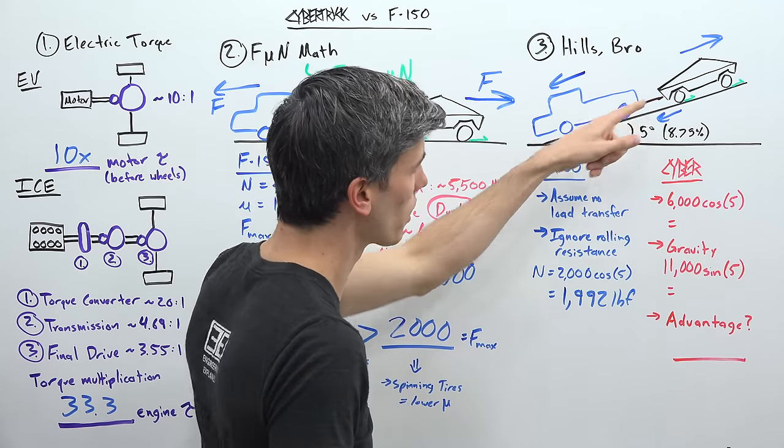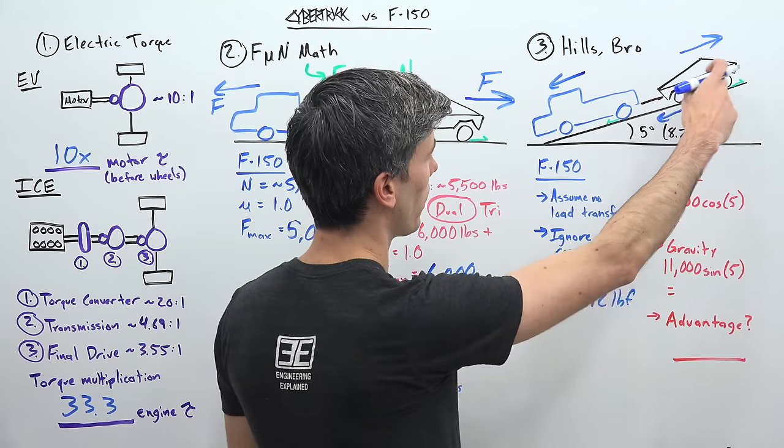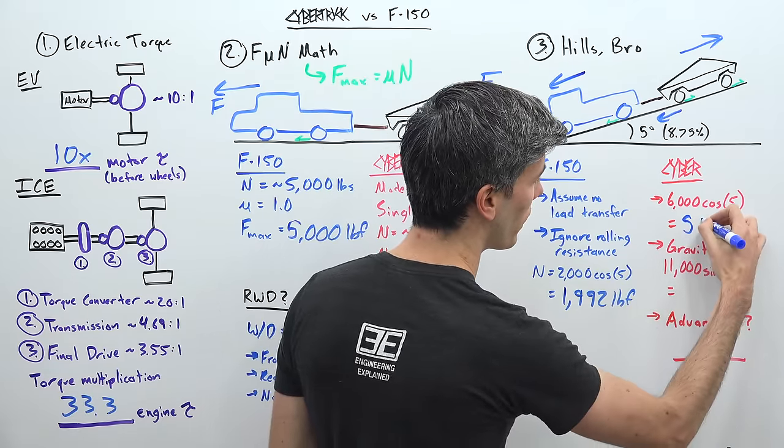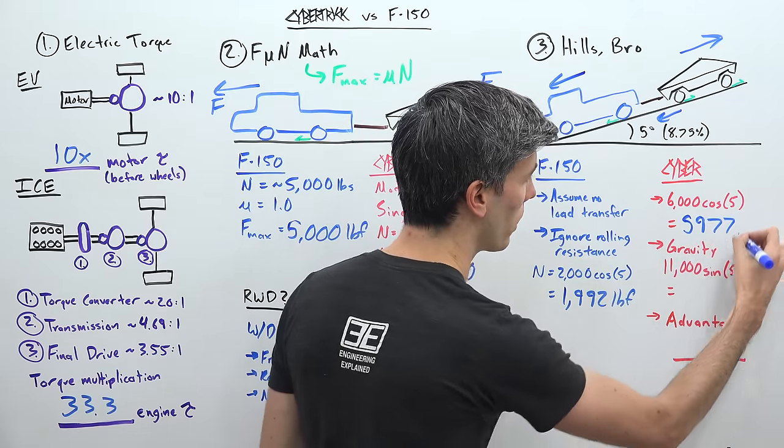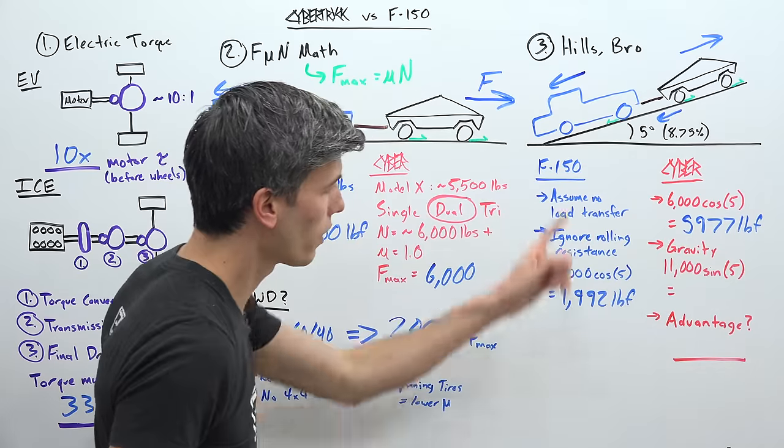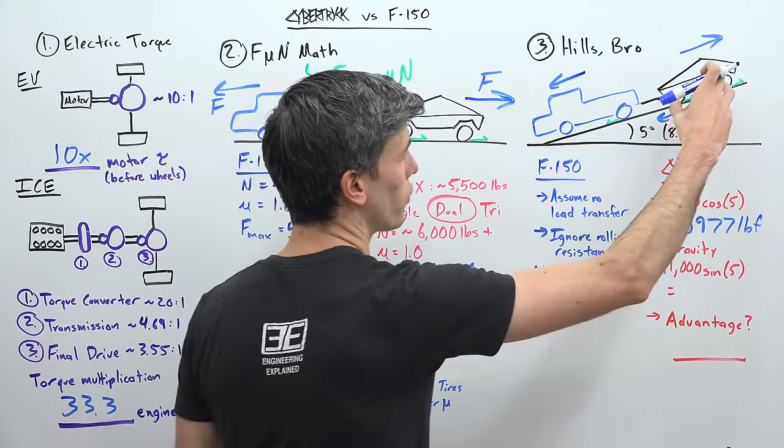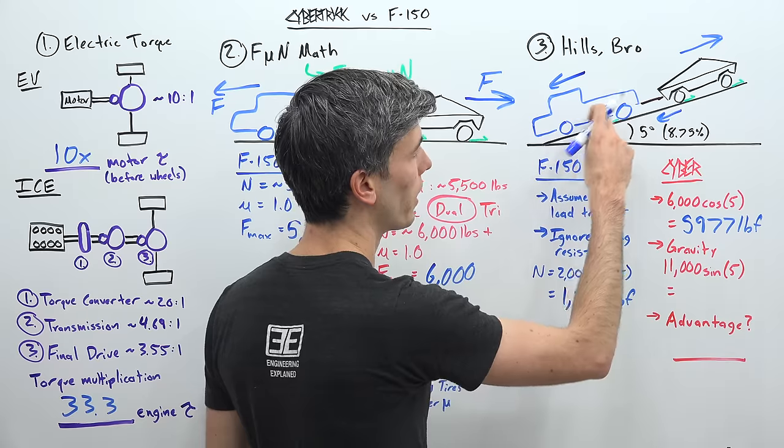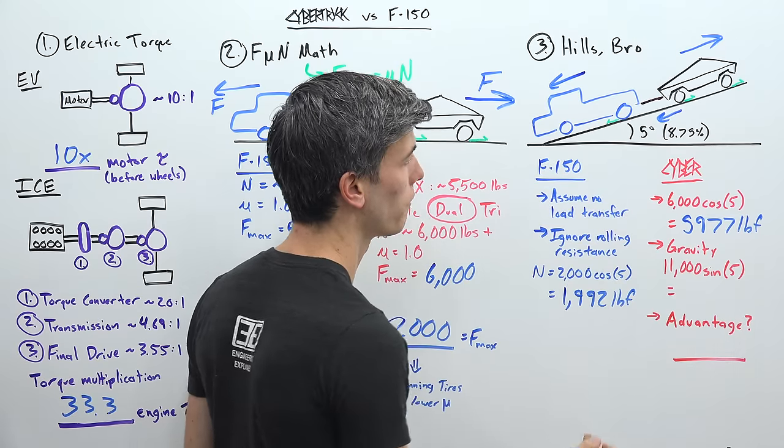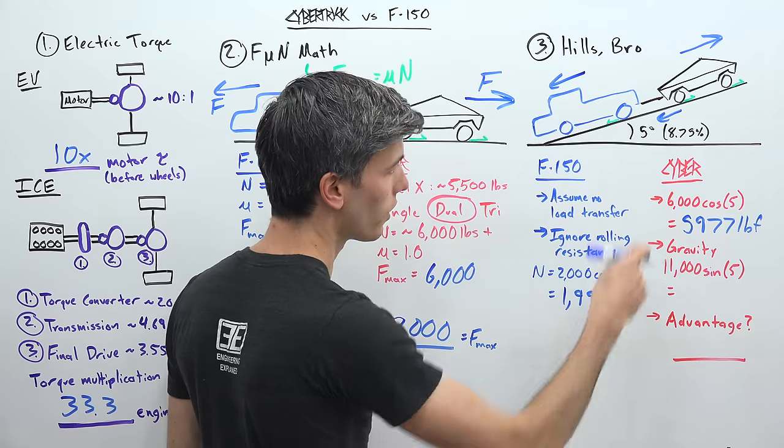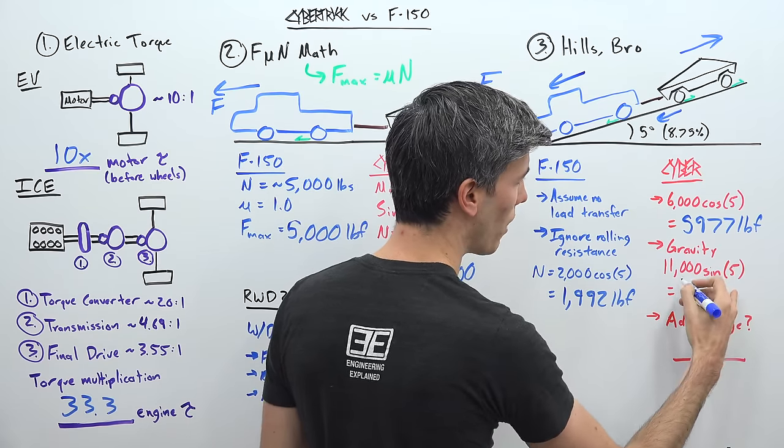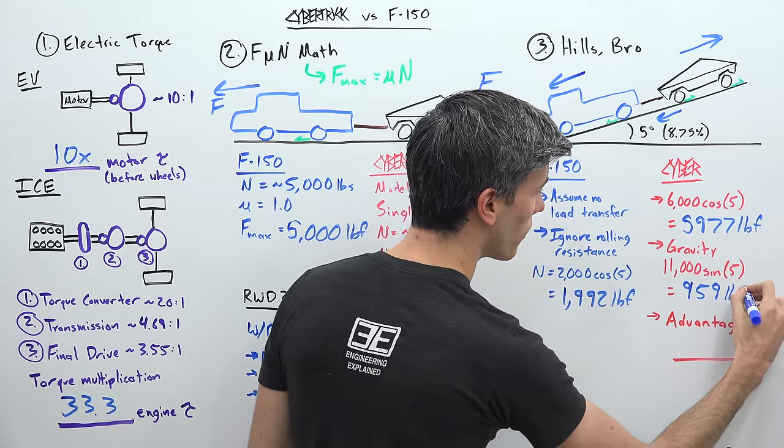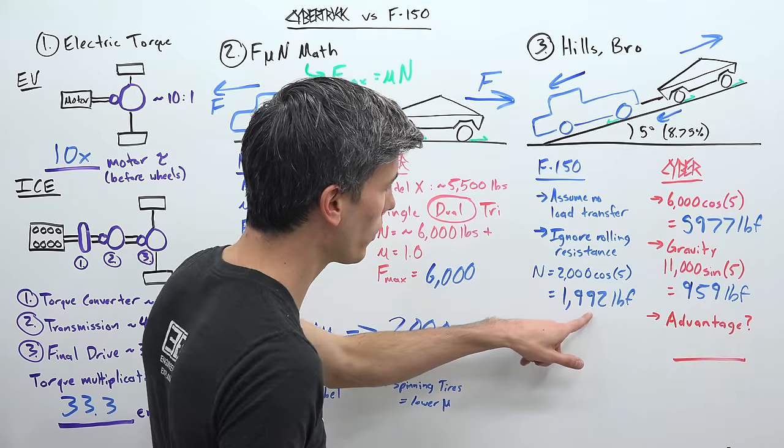For our Tesla Cybertruck, which is going up this hill, we are looking at 6,000 pounds, the weight of the vehicle, multiplied by cosine of 5. And that is going to give us 5,977 pound force in this direction. And so then we also have to account for gravity. So all of this is trying to pull the Tesla truck down that hill. So we've got 11,000 pounds combined, 5,000 here, 6,000 here. We're multiplying that by sine of 5. That's going to give us our gravity component in this direction. And so that will give us a force of 959 pounds.